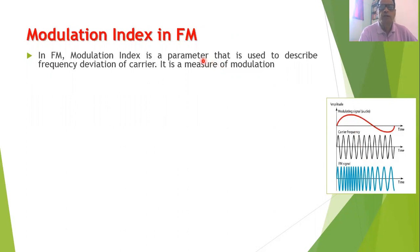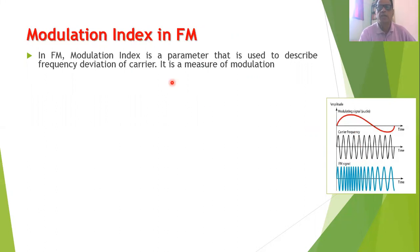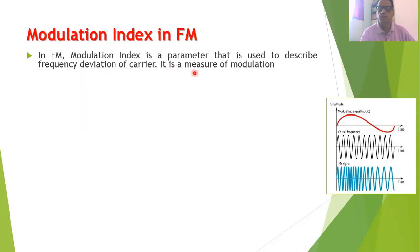In FM, modulation index is a parameter used to describe frequency deviation of the carrier from the central carrier frequency. The carrier frequency will either increase or decrease, and this change is called frequency deviation. Modulation index is a parameter used to describe such frequency deviation — you can also say it is a measure of modulation in FM, similar to AM where we also defined modulation index as the measure of modulation.